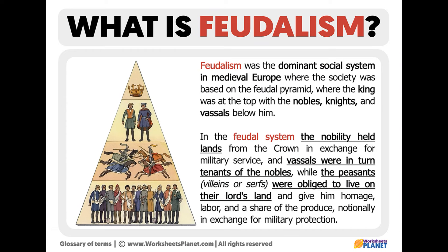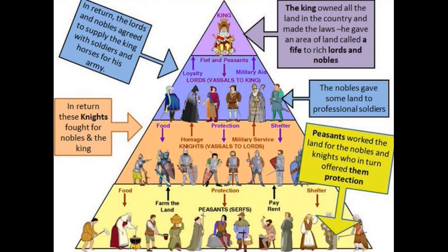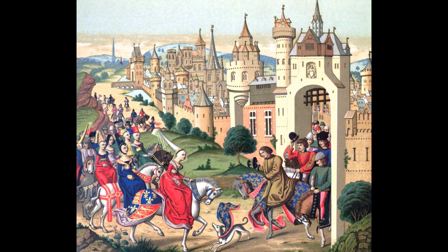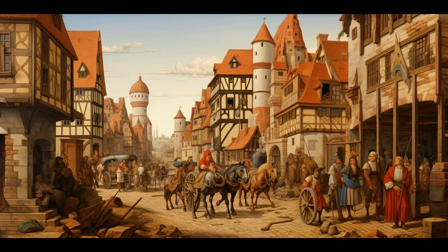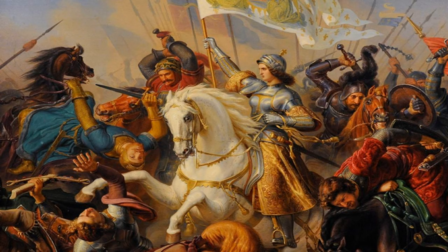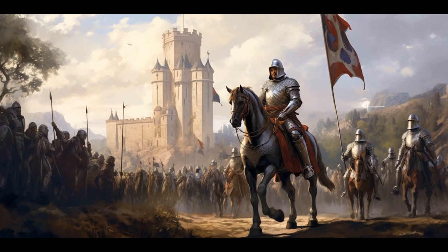Here are key points about the medieval feudal period. Feudalism was the dominant social and economic system of medieval Europe. It was based on a hierarchical structure where land was exchanged for military service and loyalty. Kings granted land — fiefs — to lords and nobles in exchange for military support and protection. In return, lords granted land to vassals and knights, who pledged loyalty and military service.